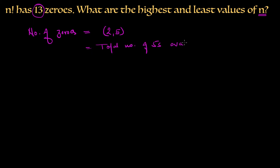It has already been given that we have 13 zeros in n factorial. We are asked to find the minimum possible value of n and the maximum possible value of n. Let's start with the multiples of 5.